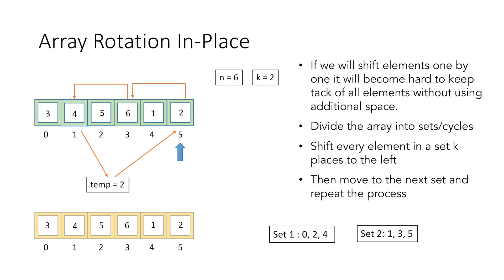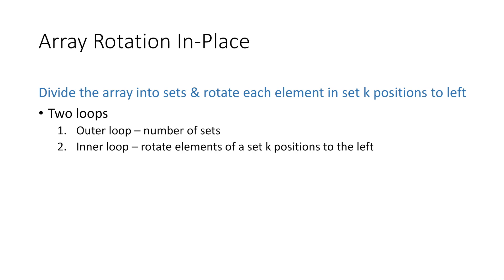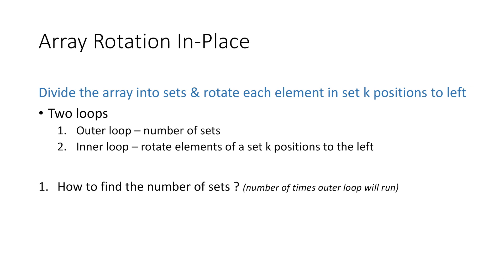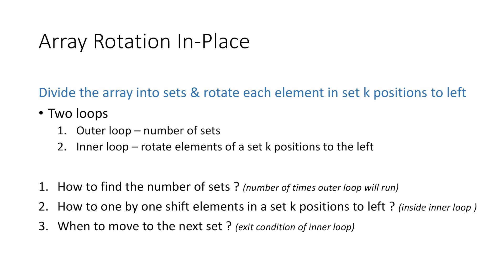By shifting elements in sets, we have successfully performed array rotation. We need to divide the array into sets and rotate each element k positions to the left. We will use two nested loops: the outer loop runs for the number of sets, and the inner loop rotates the elements of a set k positions to the left. The questions are: how do we find the number of sets, how do we shift elements within a set, and when do we move to the next set?